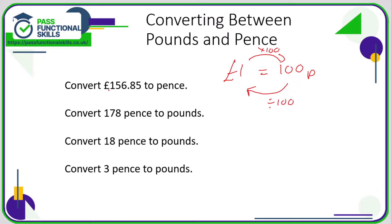So if we're converting this into pence, we need to multiply by 100 — that gives us 15,685 pence. If we're converting 178 pence to pounds, we need to divide by 100.